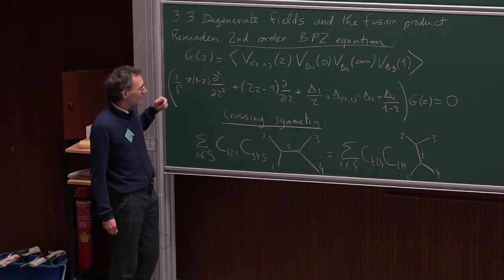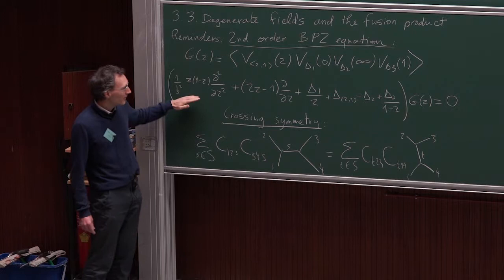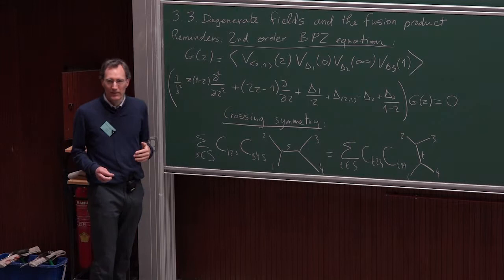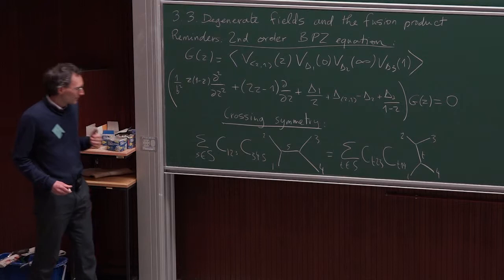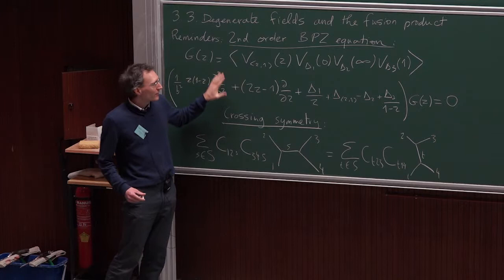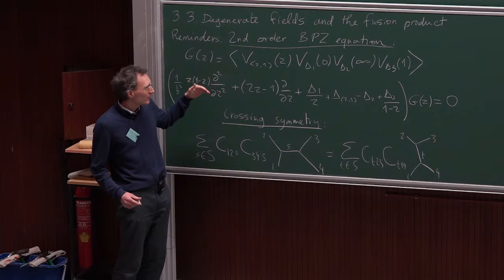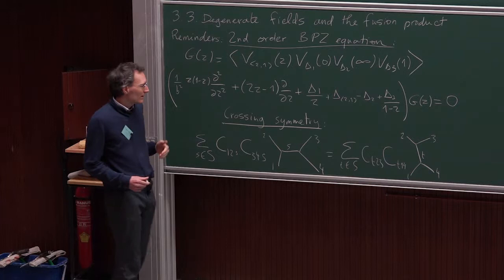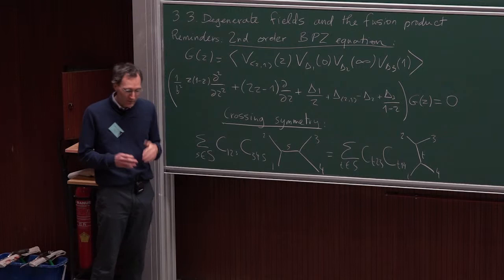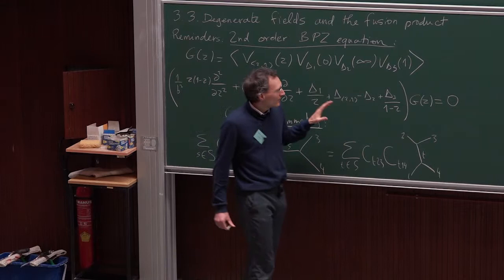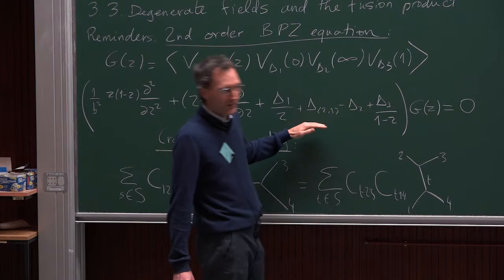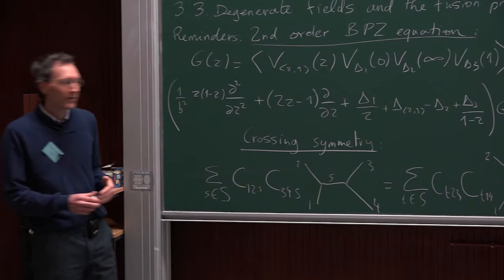This four-point function obeys a Belavin-Polyakov-Zamolodchikov differential equation of order two. This equation is a consequence of Ward identities plus the presence of a null vector which vanishes for this primary field. The equation applies not only to the four-point function but also to the conformal blocks involved in its decomposition. Conformal blocks obey all linear symmetry equations obeyed by the correlation functions, including Ward identities and the BPZ equation. Since it's an equation of order two, the basis of solutions will have just two elements.